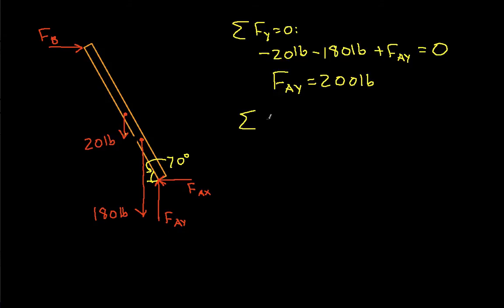Let's next look at the summation of moments about the point A. I'll call this point down here A. This has to be zero. The reason I'm choosing A is because FAY and FAX pass directly through A, so they're not going to create a moment. This will then give us FB is the only unknown, and that will allow us to solve for FB.